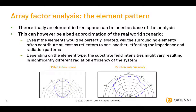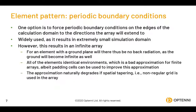Furthermore, for antennas that contain substrates, as the constellation of the array changes, so does typically the substrate field intensity. This means that for a real array, radiation efficiency tends to be a function of element locations as well.